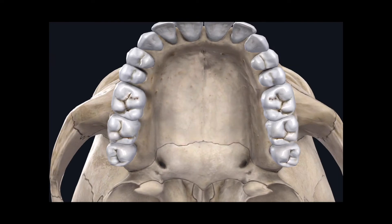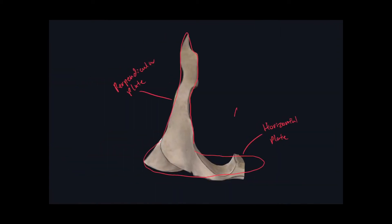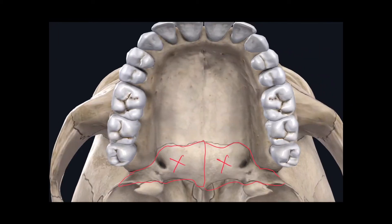In this next image we can see the hard palate in its fullness. We are looking superiorly up towards the maxilla as well as the palatine bones. Here we have our set of palatine bones — here's one and here's the second one. These landmarks right here are the horizontal plates of the palatine bone, which make up the most posterior portion of the roof of the mouth.